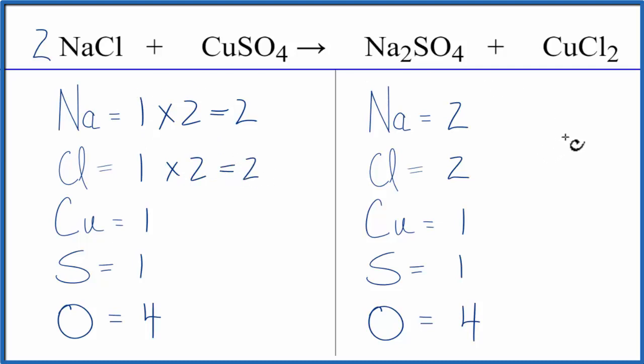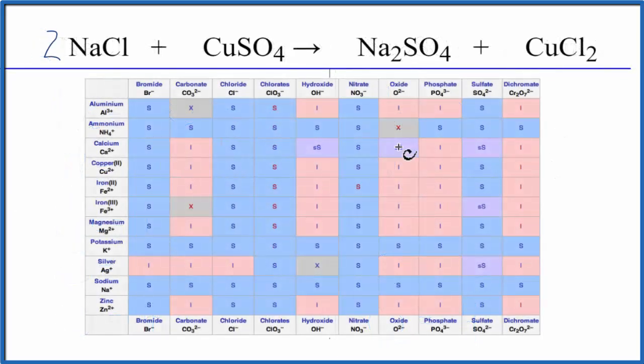The more important question is, does this reaction actually happen? And to answer that, we need to look at solubility. So this is a solubility table, and we can look and see whether each one of these compounds is dissolved in water. That's what we call aqueous, soluble in water.